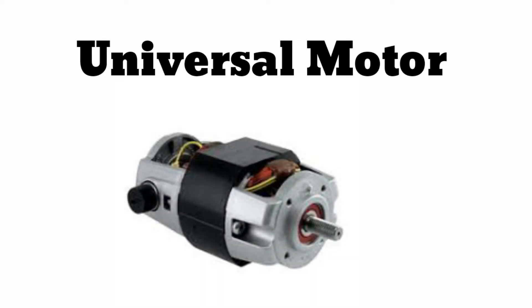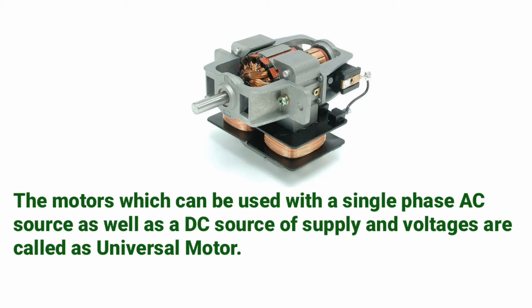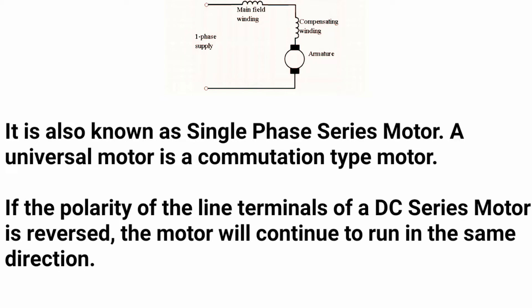Hello everyone, today we are going to discuss the universal motor. A universal motor is a type of electric motor that can be operated on either AC or DC — that means both supplies. Motors which can be used with a single-phase AC source as well as a DC source of supply are called universal motors. It is also known as a single-phase series motor.